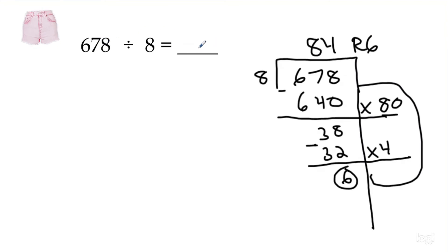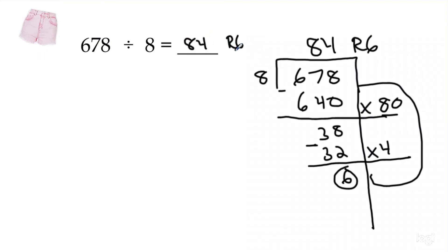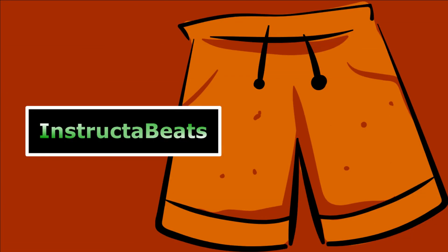So 678 divided by 8 would give you 84 groups of 8, then you have a leftover 6. It's short because it's an Instructor Beats short — what can we say? Check out our partial quotient song if you need extra help, and we have some full-length lessons for you to check out as well. Instructor Beats, out.